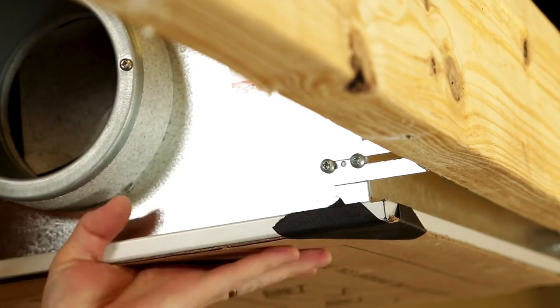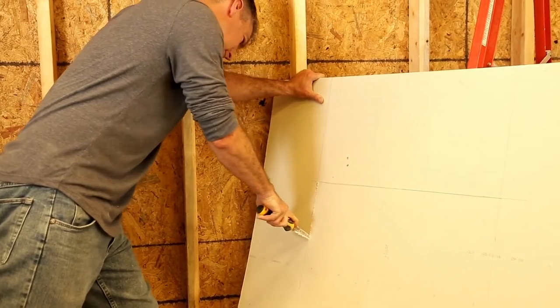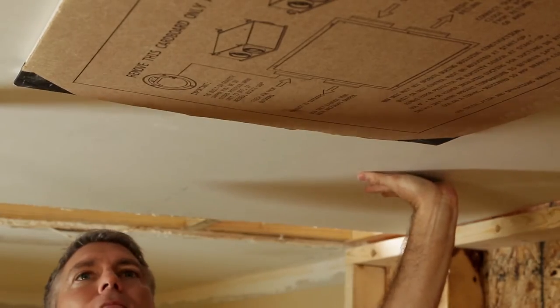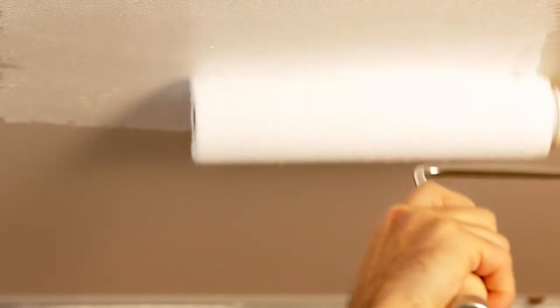Before installing drywall on ceiling, cut a properly sized hole in the drywall to allow the drywall to slide beneath the flange of the unit. Finish drywall normally. The access door and flange can be painted to match the ceiling color.